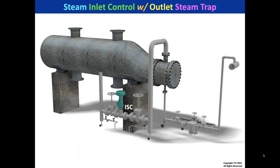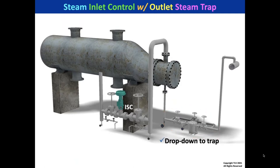Let's take a further look at a kettle reboiler with an outlet steam trap. In addition to sizing and selecting the trap, I'd like you to consider installing a drop-down to the trap, a float trap as the preferred trap type, and a check valve at the outlet. I'm going to explain those three recommendations.